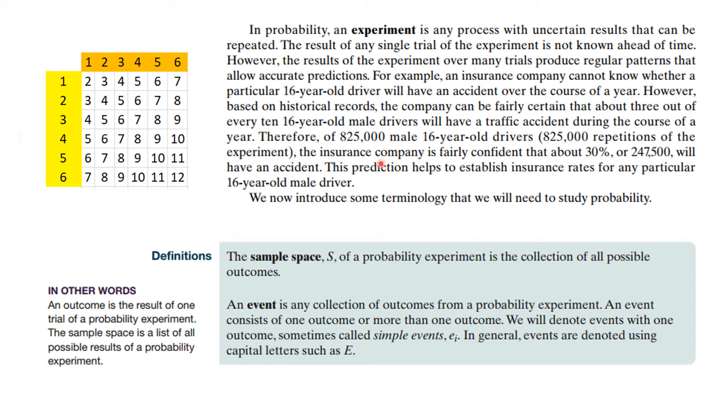Now, in probability, an experiment is any process with uncertain results that can be repeated. And so we can do the experiment of tossing these die like we did. And in fact, this ends up being the set of outcomes. And that's in fact, what we call a sample space. Okay, so here, the sample space, capital S, of a probability experiment is a collection of all possible outcomes. So that is the stuff that we see inside the body of this table. Those are the possible outcomes of our experiment. Now, an event is any collection of outcomes from a probability experiment. An event consists of one or more outcomes. And events are sometimes denoted with set numbers or letters like E.